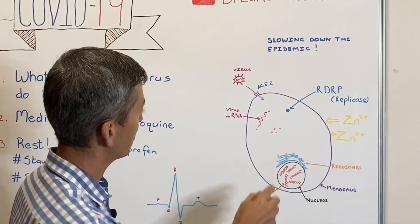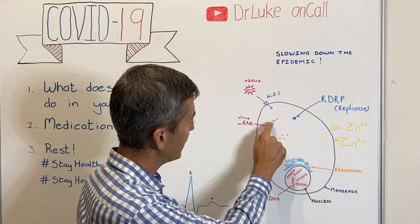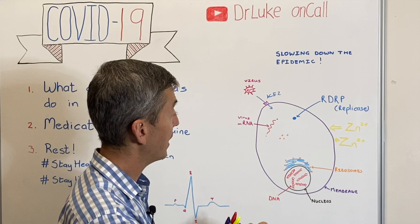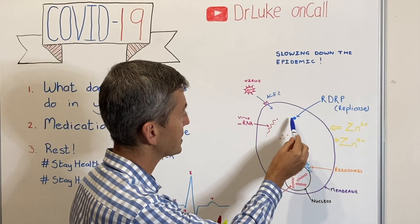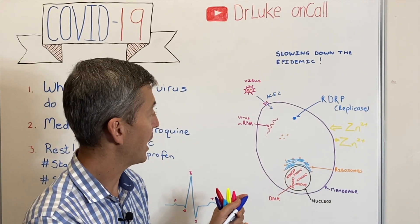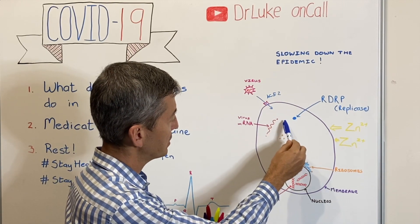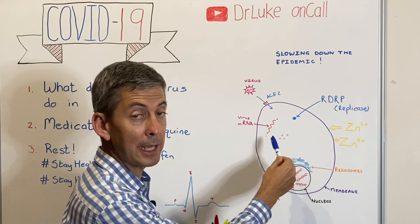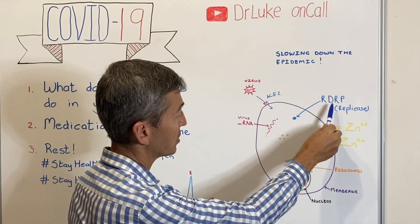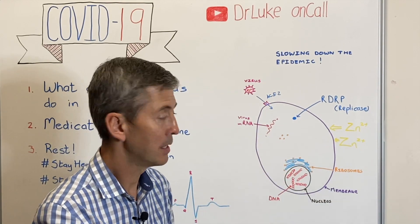What now happens is these ribosomes — the little orange structures — read the code of the RNA, just as they would read your own RNA when DNA becomes RNA. They start making protein. One of the most important things they make is an enzyme called RDRP. That's a very important component for this virus, because what RDRP does is read the code and start making new RNA — essentially making more viruses. If this is not stopped, it just keeps making more and more RNA, producing baby viruses.